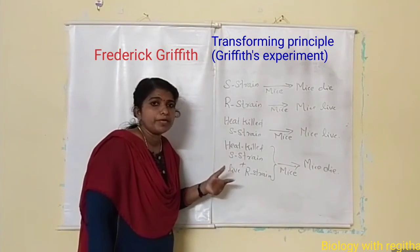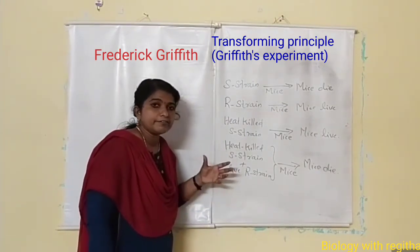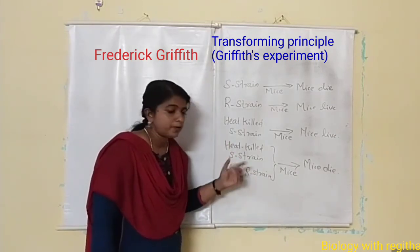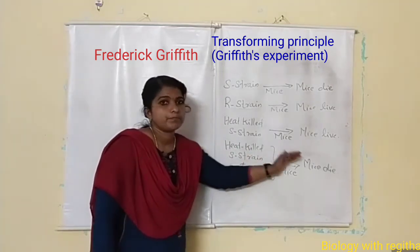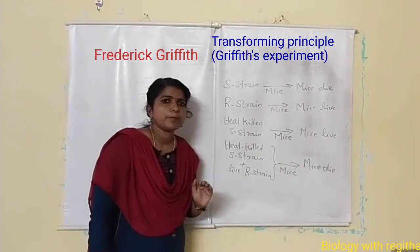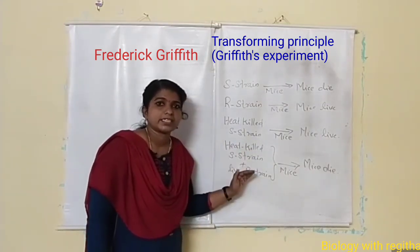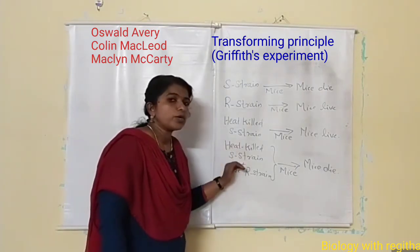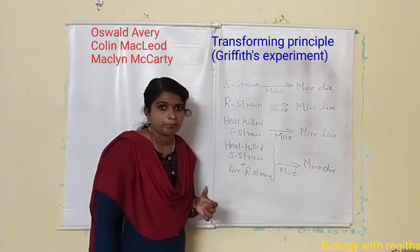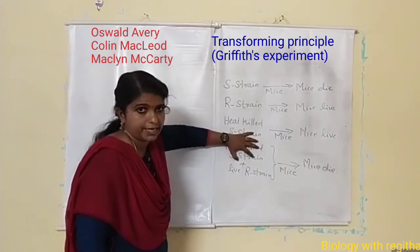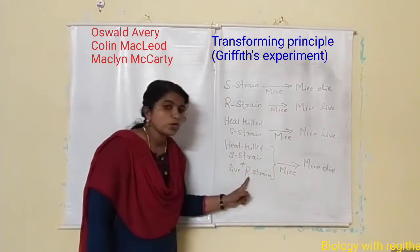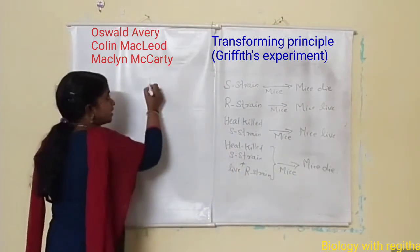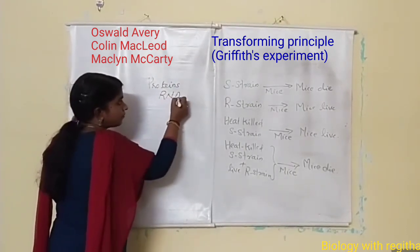He called it the transforming principle, because he was unable to identify the exact biochemical nature of that transforming principle. He understood that something was transferred from the heat-killed S-strain to the R-strain to make it become S-strain. At that time, most people believed it may be protein which acts as the genetic material. Later, three scientists — Avery, McLeod, and McCarty — proved the biochemical nature of the genetic material. They purified the chemicals from the heat-killed S-strain and identified which one was responsible for converting the R-strain to S-strain. That purified extract included proteins, RNA, and DNA.